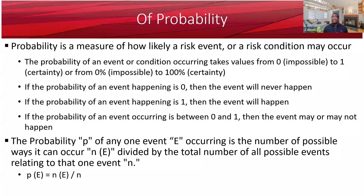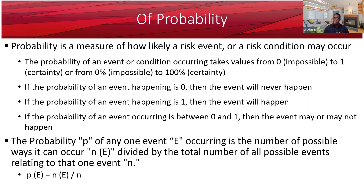So what is a probability? From a risk management perspective, you can say that a probability is a measure of how likely a risk event or a risk condition may occur. The probability of an event or condition occurring will take values from 0 to 1, or from 0% to 100%.